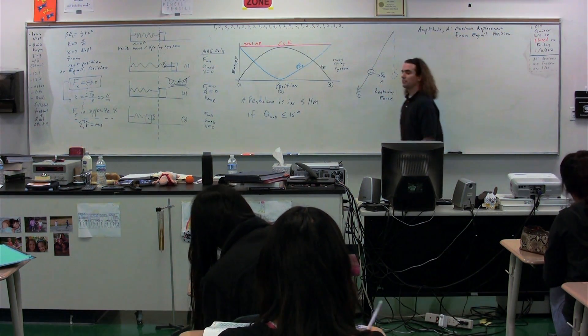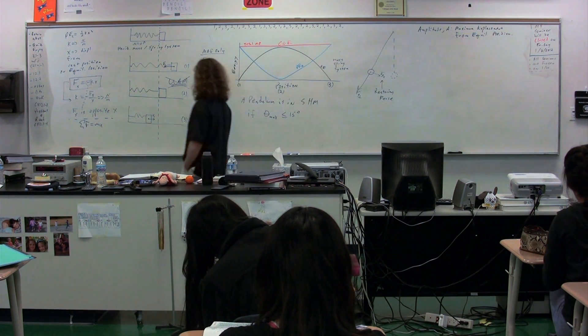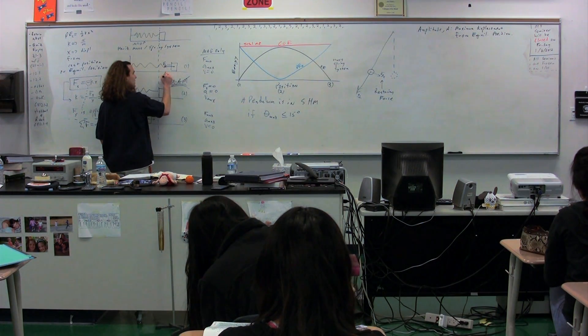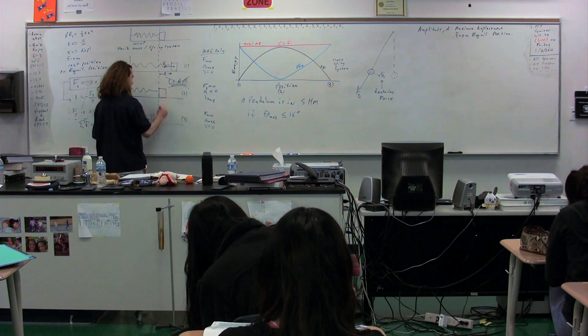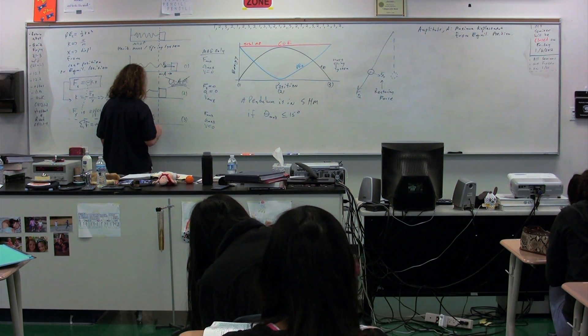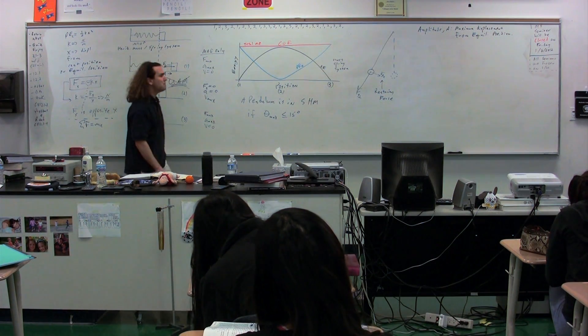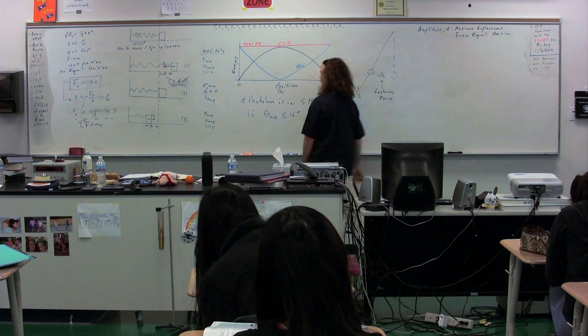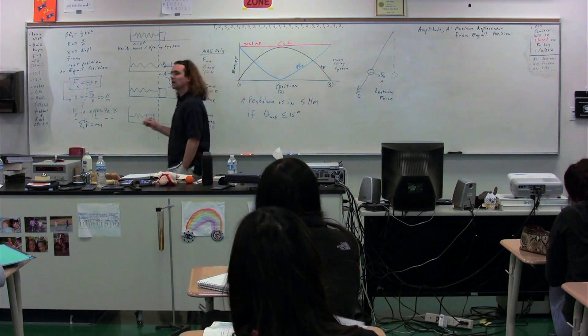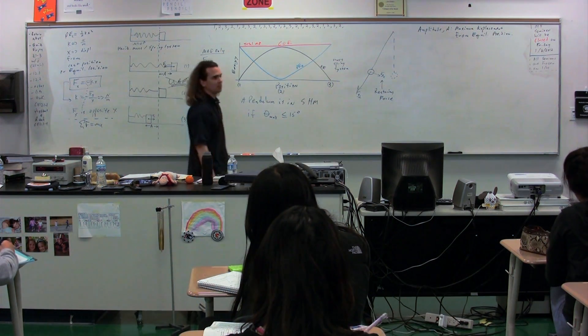Coming back to the figure we drew before, the amplitude can be represented by that distance, which is the same as that distance, the maximum displacement from the equilibrium position. So at positions one and three, the mass is at its amplitude.